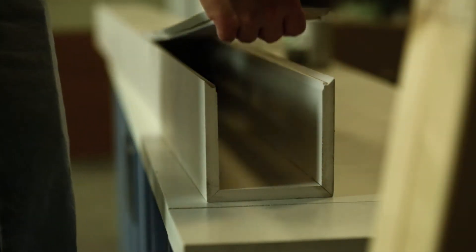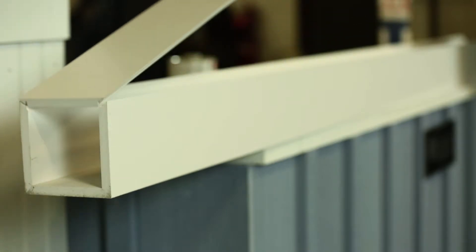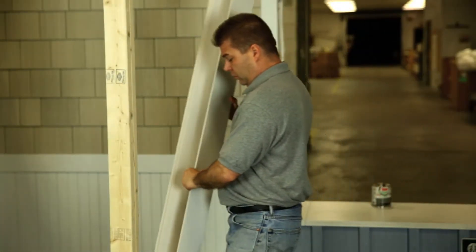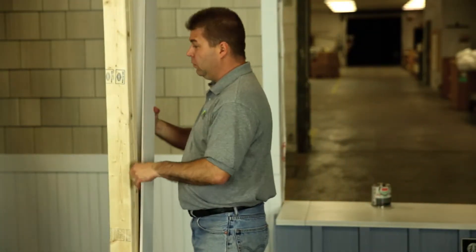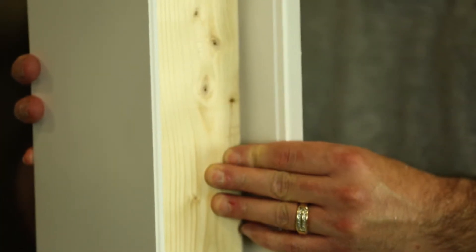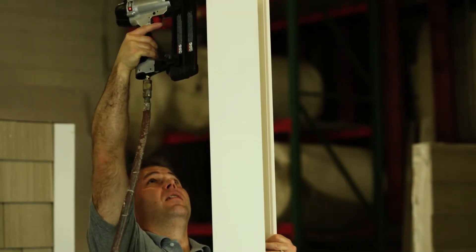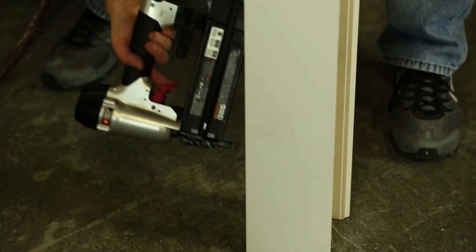To install, put your three sided column onto your post. You may have some extra room in between your post and your column. You can brad nail, nail, or screw one side of the column to keep it in place.